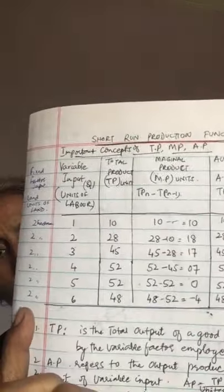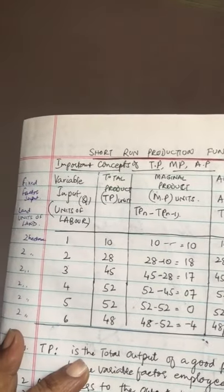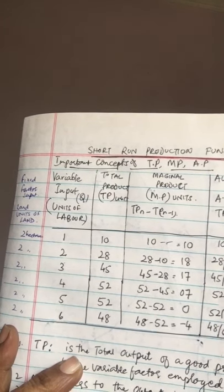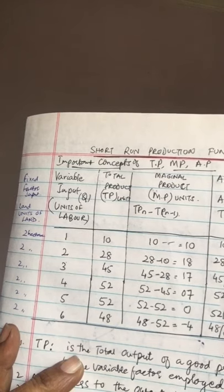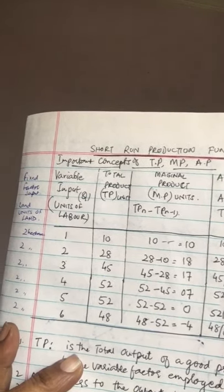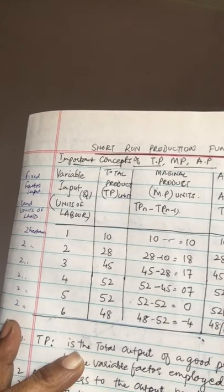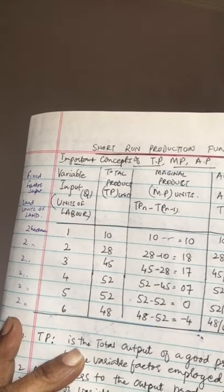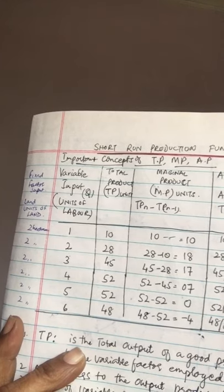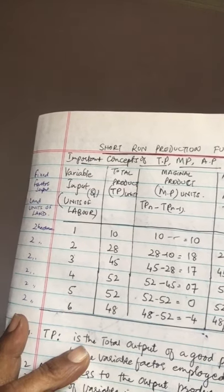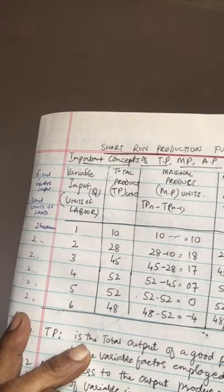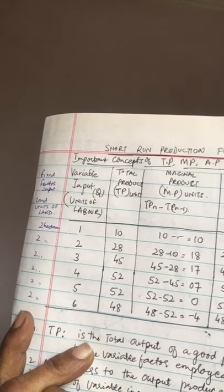Suppose there are two factors of production: land and labor. Land is a fixed factor and labor is a variable factor. Suppose you have land measuring two hectares and grow groundnuts on it with one unit of labor — the proportion between labor and land will be one is to two. If units of labor are increased to two, the new proportion becomes two is to two, meaning one hectare of land per unit of labor.